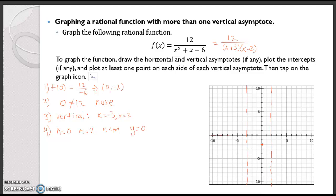Go ahead and fill that in. Now, how do we tell if the graph crosses the line y equals 0? Well, we plug 0 in for y — we already did that when we found no x-intercepts — so the graph is not going to cross there.